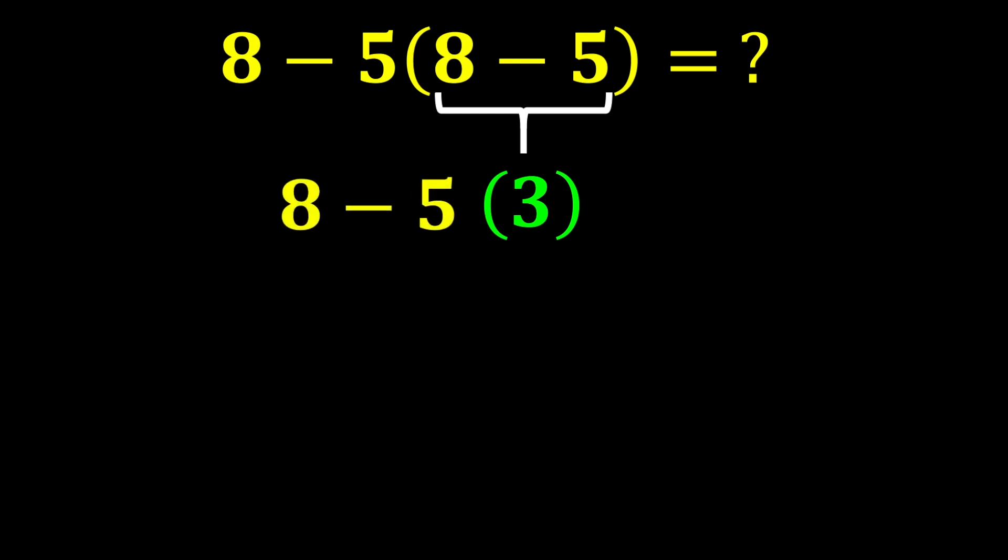And the expression becomes 8 minus 5 multiplied by 3. When a number is next to parentheses, it means multiplying that number by the value inside the parentheses, but usually, for simplicity, the multiplication sign is not written.